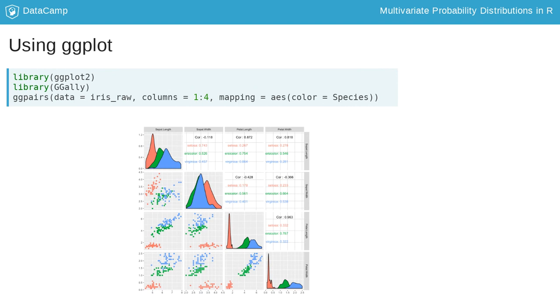The simplest implementation of ggpairs is to specify the dataset data equals iris_raw, and specify the columns to plot. For example, specifying 1 colon 4 plots all four numeric variables. Additionally, one can color by species using the argument mapping equals AES with the argument color equals species. A similar plot using the generic plot function would have required several lines of code.